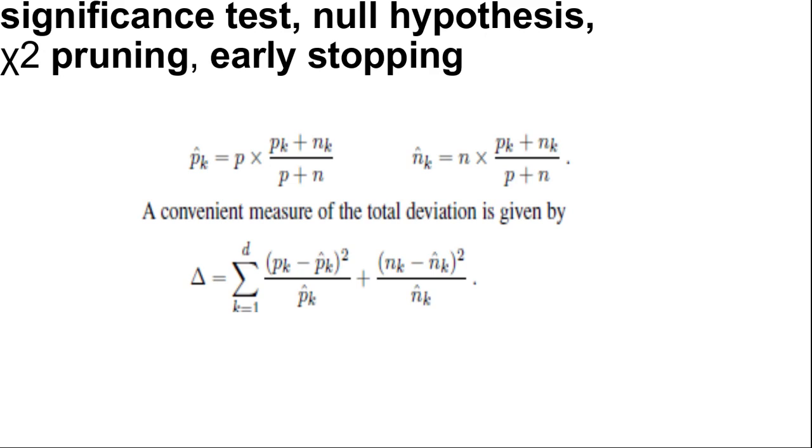In this case, the null hypothesis is that the attribute is irrelevant and that the information gain for an infinitely large sample would be zero. We need to calculate the probability, under the null hypothesis, that a sample of size V = N + P would exhibit the observed deviation from the expected distribution of positive and negative examples.